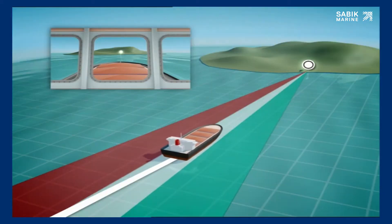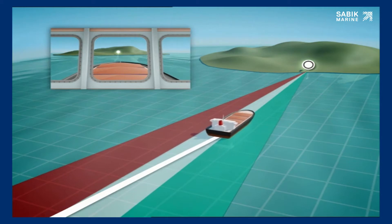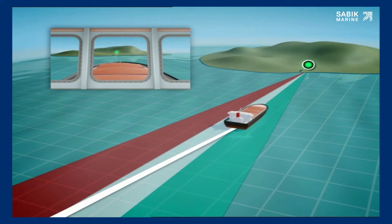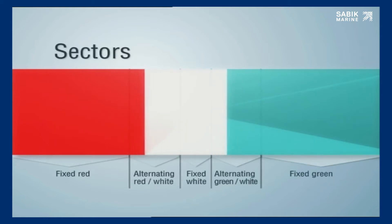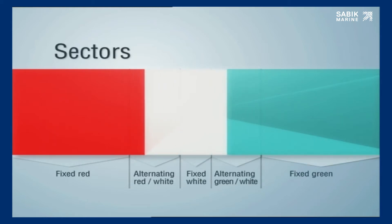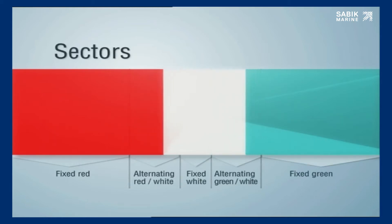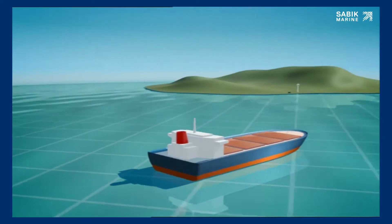One limitation of any sector light is that the colour jumps from one sector to another with no warning of an approaching change. The Pell light overcomes this with the patented oscillating boundary system, in which the signal alternates between two different colours.